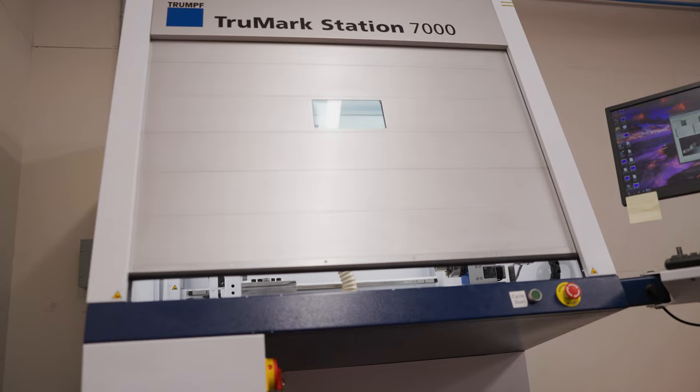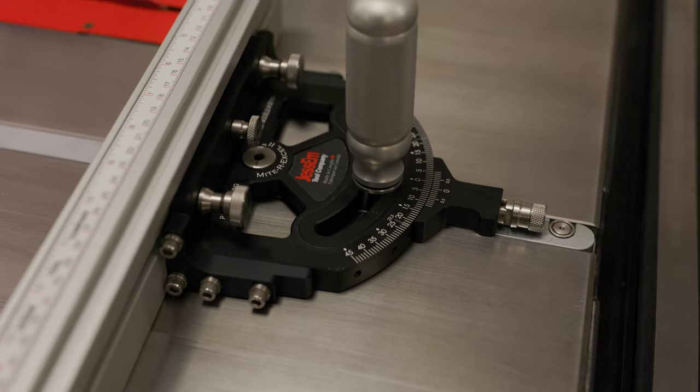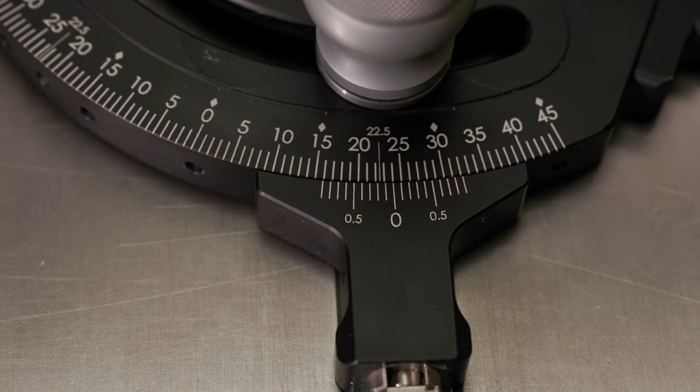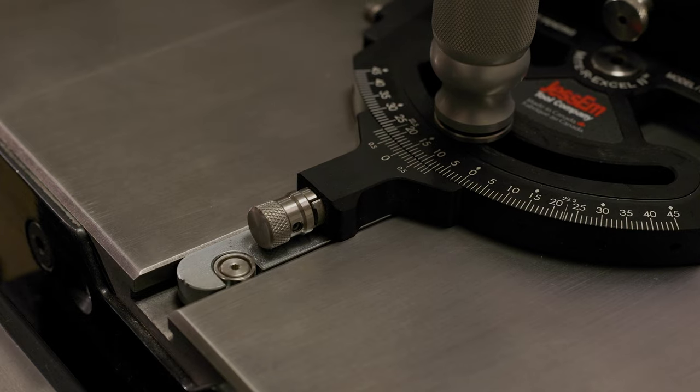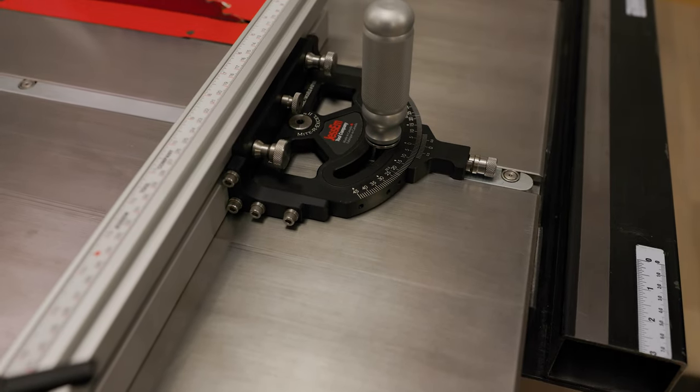We laser engraved the entire miter gauge at the same time to ensure perfect accuracy, ranging from 0 to 45 degrees in either direction. We even included an indexing block for making micro adjustments, and 9 separate indexing detents for quickly changing between popular angles.